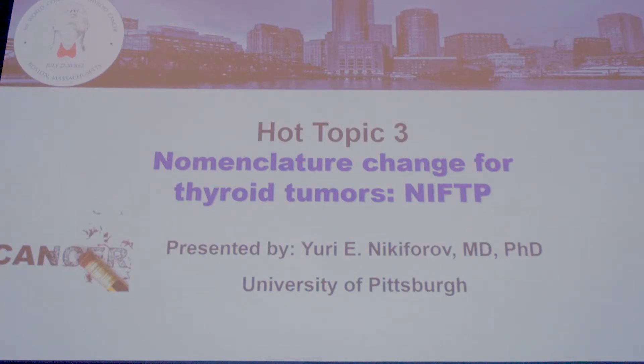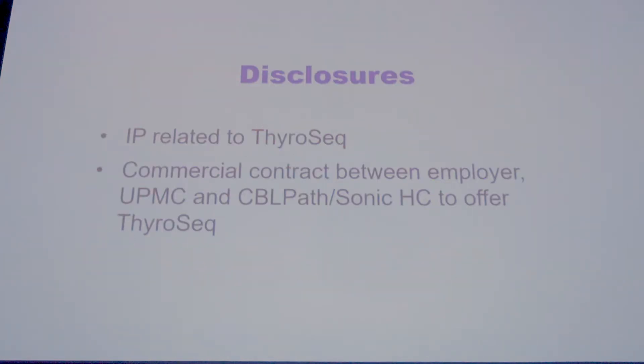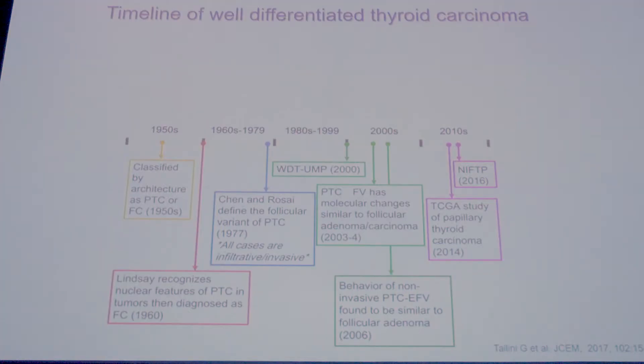Thank you Brian for inviting me. I want to start — and I apologize for non-pathologists in the audience — with a busy slide covering the history of how we've been diagnosing papillary and follicular thyroid cancer. Many years ago, in the 1950s at the beginning of the modern era of pathology, life was very easy: we had tumors that had papillae and tumors that had follicles.